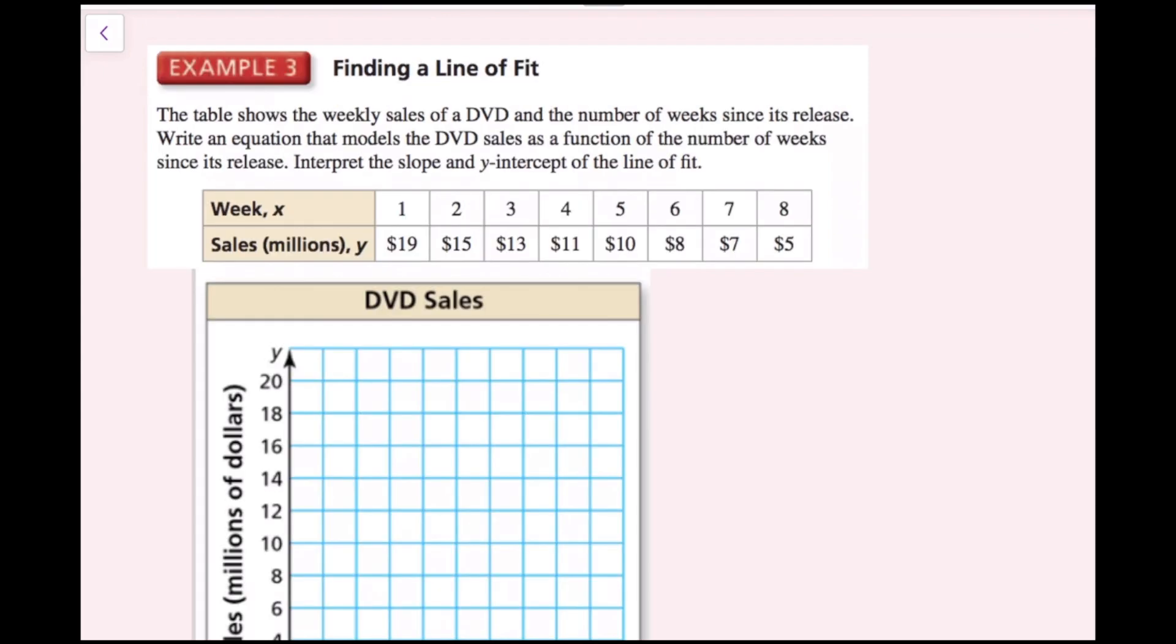The table shows the weekly sales of a DVD and the number of weeks since its release. Write an equation that models the DVD sales as a function of the number of weeks since its release. Interpret the slope and y-intercept of the line of fit. The first thing we need to do is take this table of values and plot them on the graph to make a scatterplot.